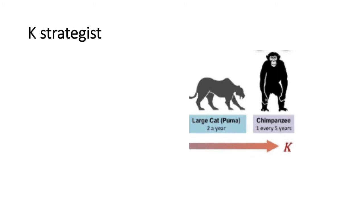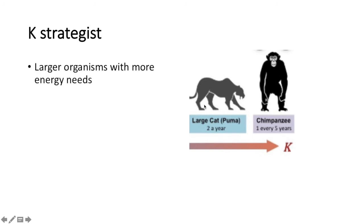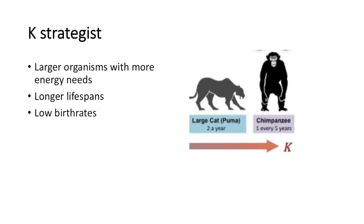Some organisms and populations rely on logistic growth and are known as K-strategists. These organisms usually have more energy needs — they tend to be higher-level predators that require a lot of energy for homeostasis. They're also larger organisms with longer lifespans, and they have lower birth rates because they invest more resources into raising their offspring.